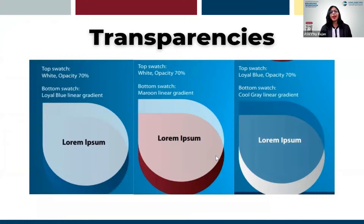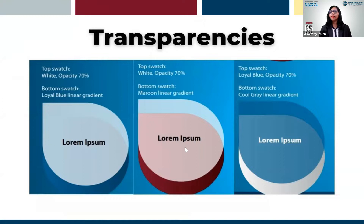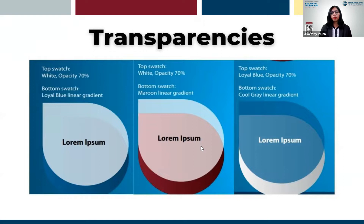Another new feature in the brand manual is transparency — a very interesting feature to explore. There are three versions using primary colors. For blue and maroon, white is placed on top and made 70% transparent to create the effect. Beyond 70% the color changes completely, which is why it is not allowed. For cool gray, since it is a very light color, blue is used over it rather than white. You can use these three kinds of transparency while creating posters or videos.